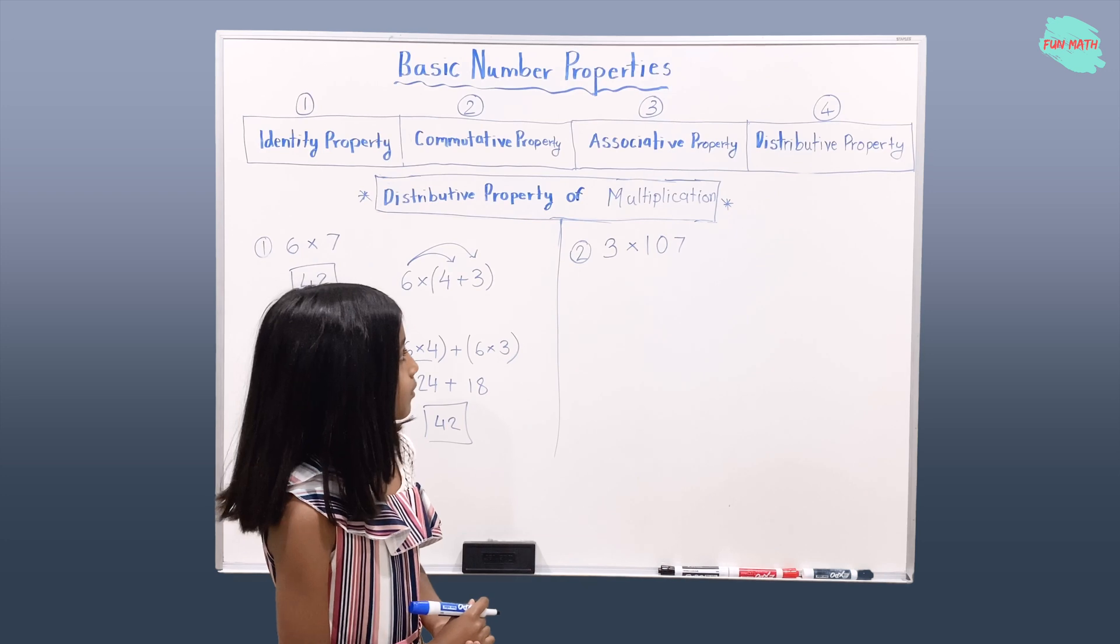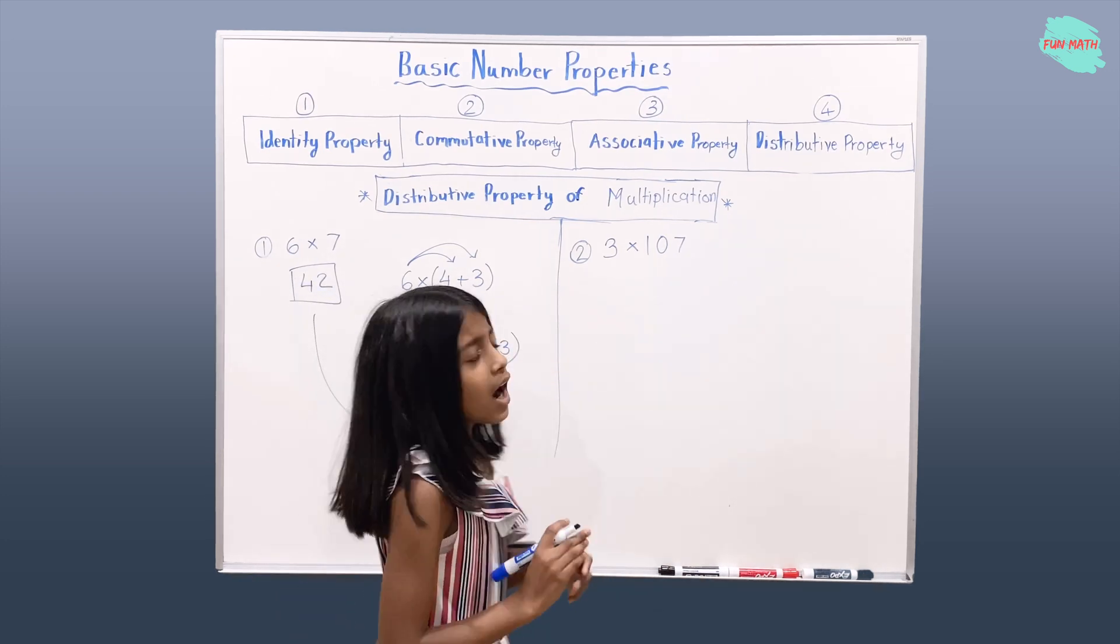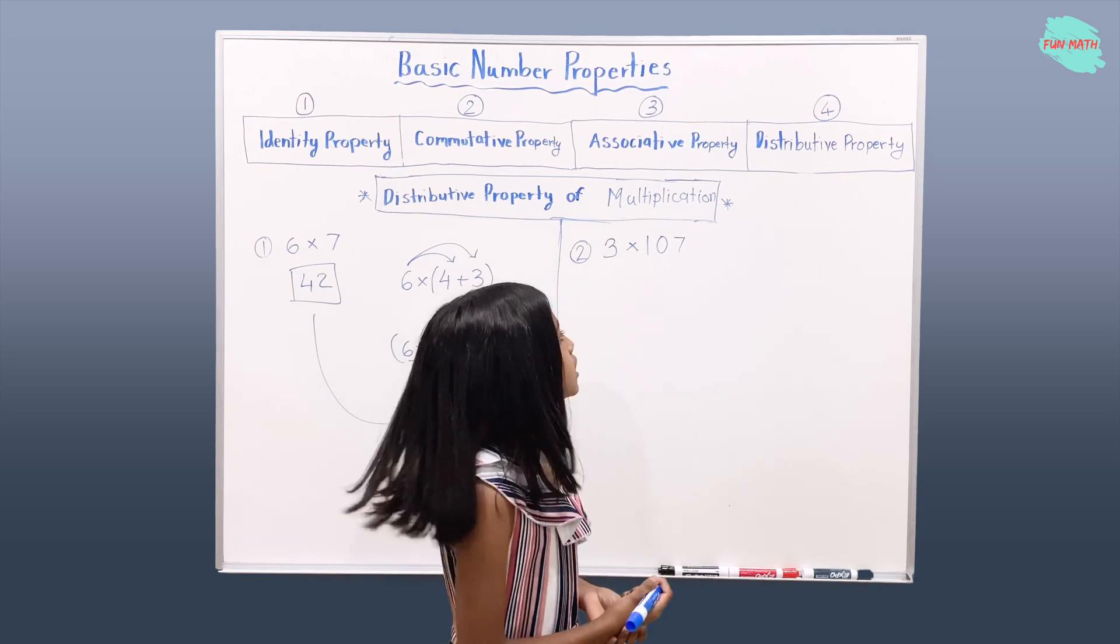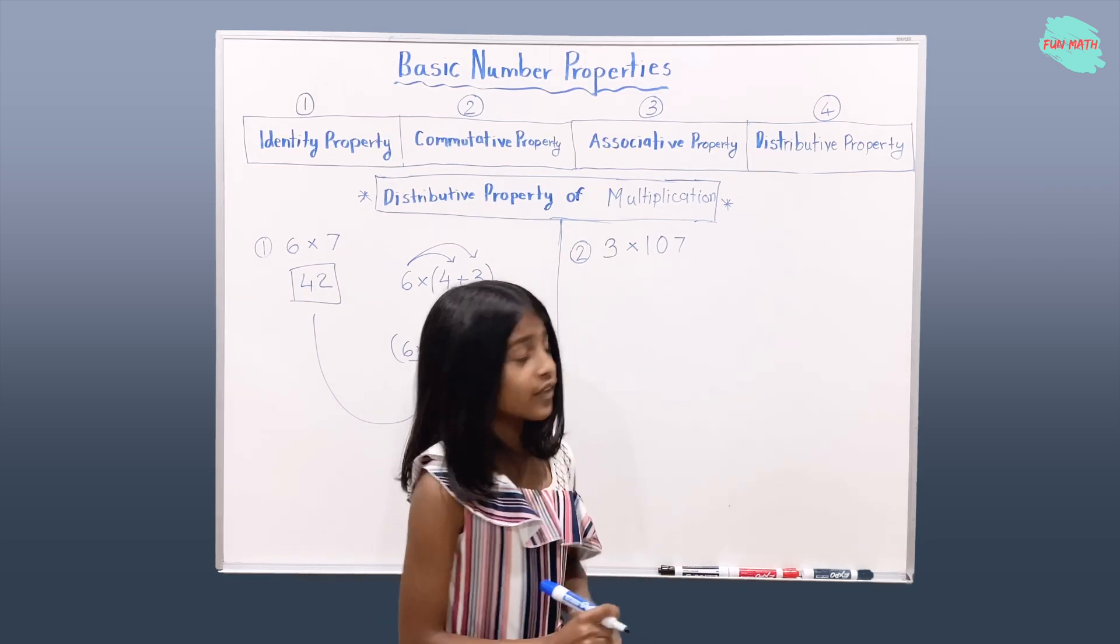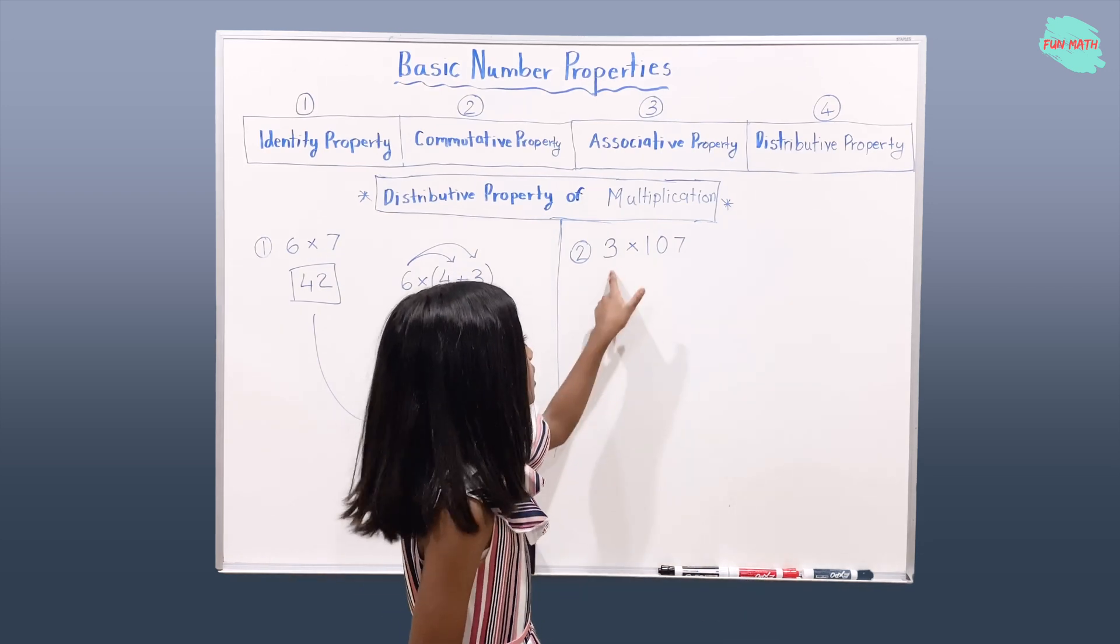Okay, so now let's go to the second example. 3 times 107. I don't remember the 107 tables. Now, if I don't know the 107 tables, I'm just going to multiply this directly.